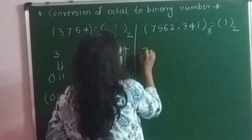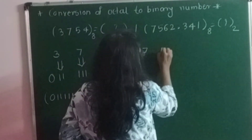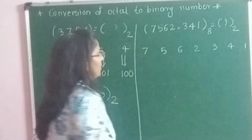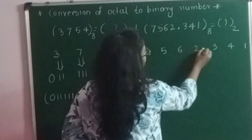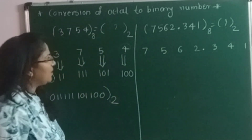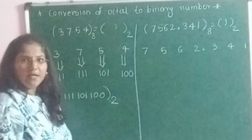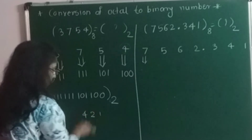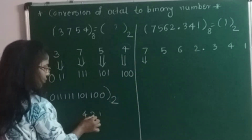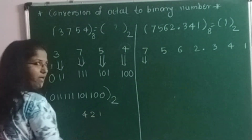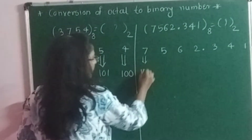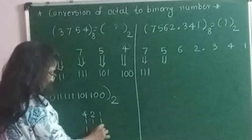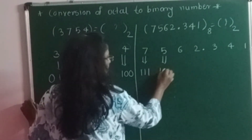Write the digits: 7, 5, 6, 2, then point, then 3, 4, and 1. Now convert each digit into its equivalent 3-bit binary number. For 7, writing weighted values 1, 2, 4: 4 plus 2 plus 1 equals 7, so all three are selected — write triple 1. For 5: 4 plus 1 equals 5, so those two are selected and 2 is not — result is 1, 0, 1. For 6: 4 plus 2 equals 6, no need to select 1 — result is 1, 1, 0.